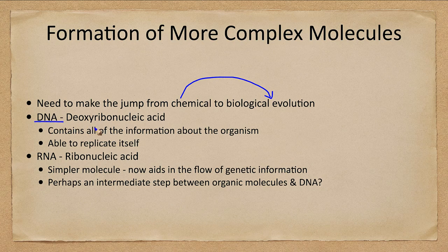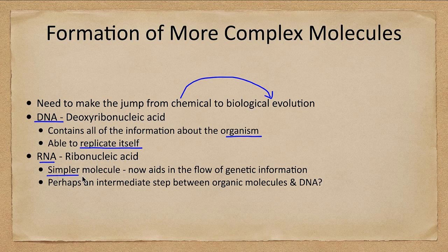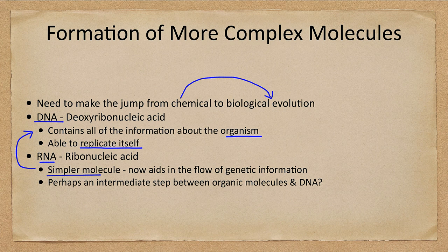The DNA that makes up all organisms, including ourselves, contains all the information about any organism and is able to replicate itself. We also have RNA — ribonucleic acid — which is simpler and helps aid in the flow of genetic information, and may have been a step in between going from complex chemical compounds to very simple biological compounds. It's a big jump — even though there's not a lot of difference between them, actually making that jump from chemical to biological is a big, big step.